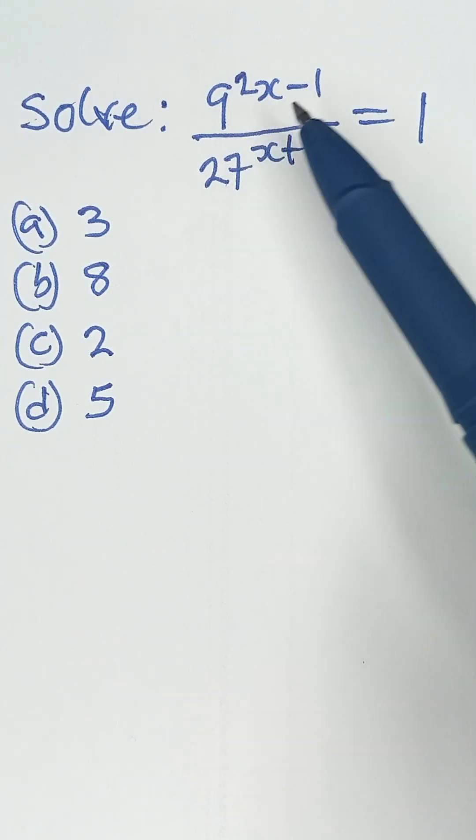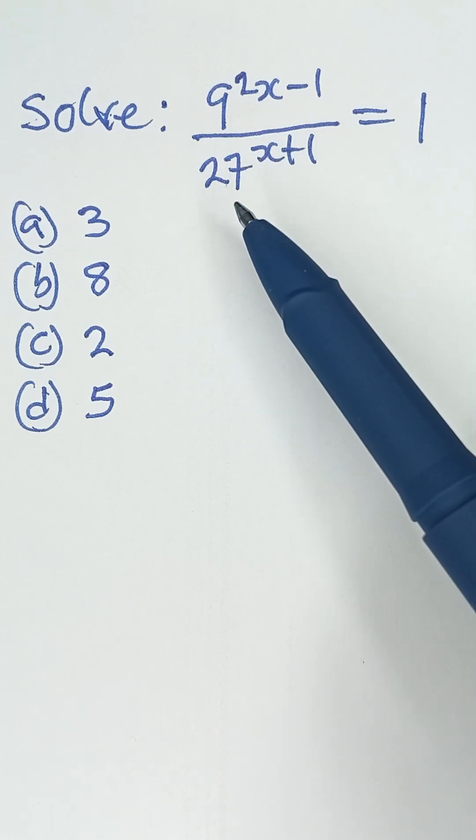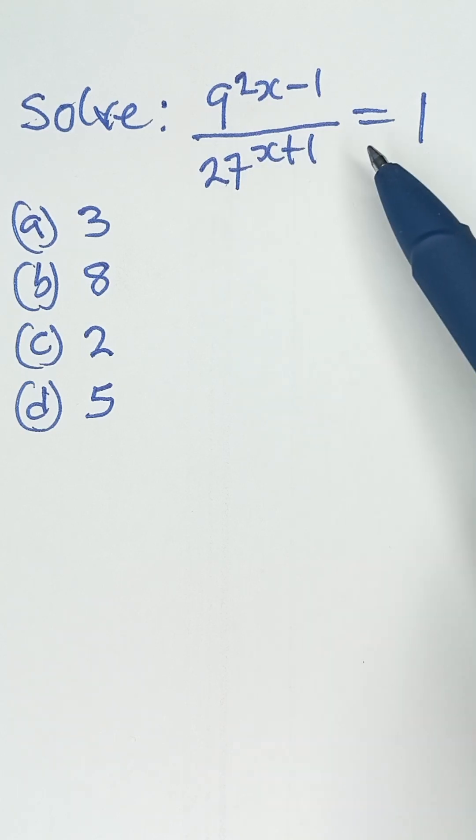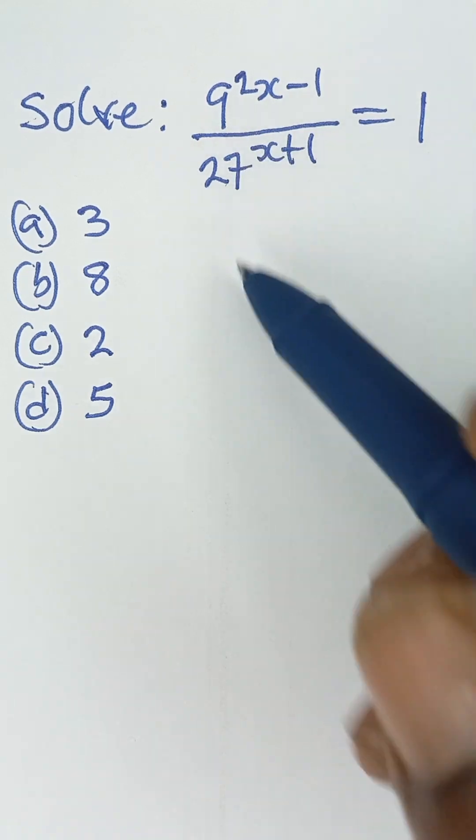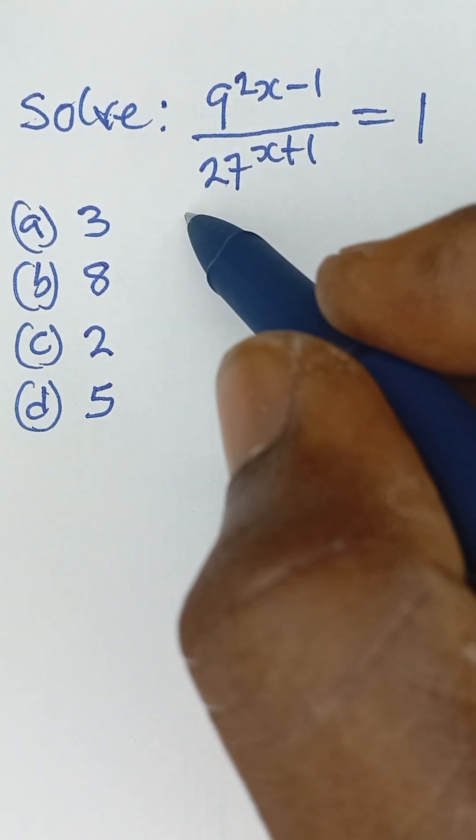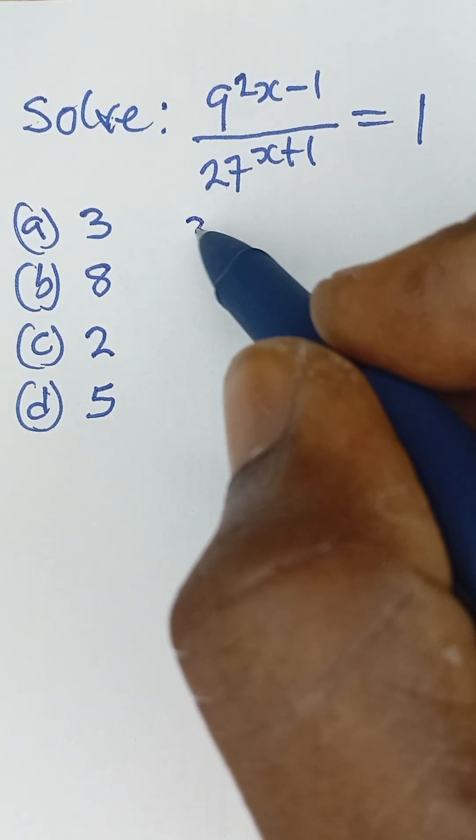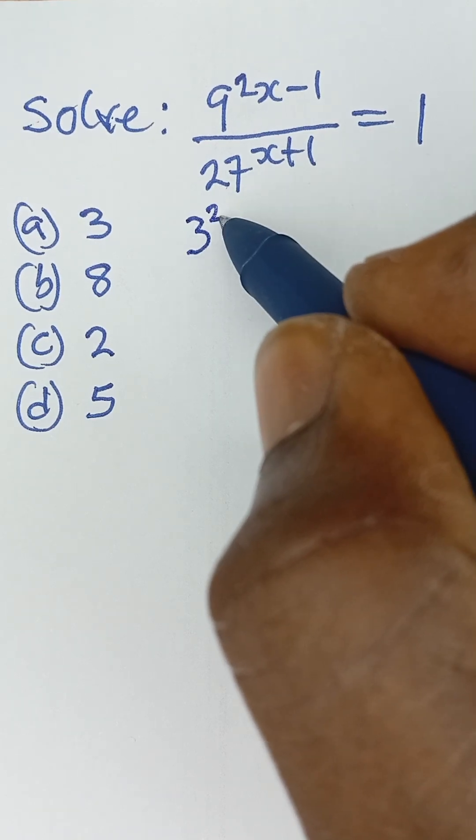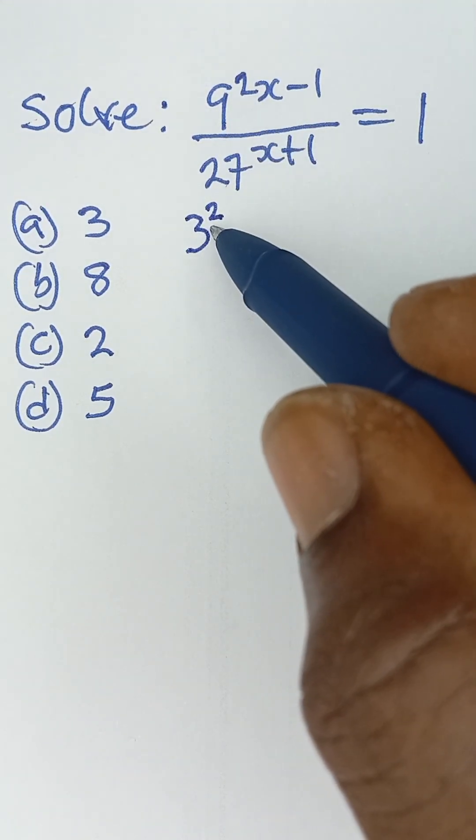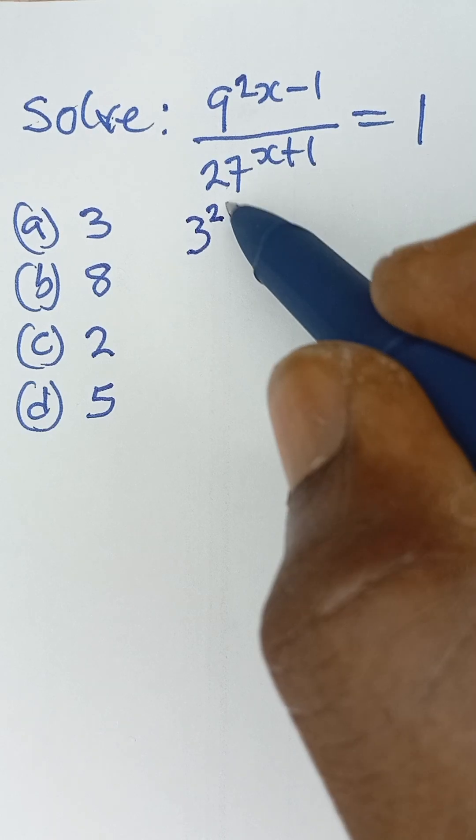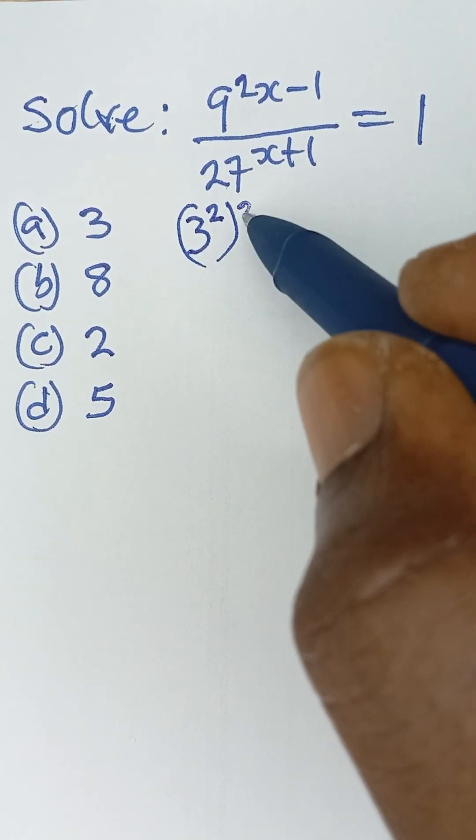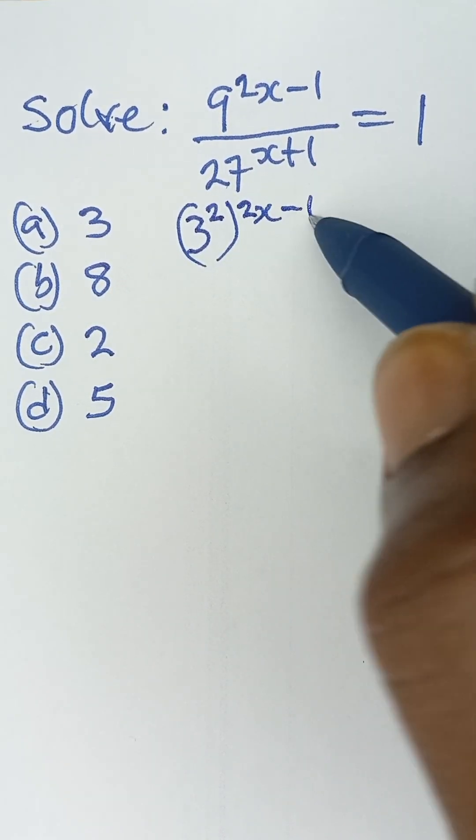Solve 9 raised to the power 2x minus 1, all over 27 raised to the power x plus 1, equals 1. Now, if you look at this 9, we can make it become base 3. So 9 is equal to 3 squared, and then all raised to the power 2x minus 1.